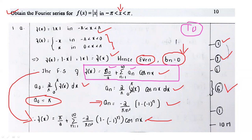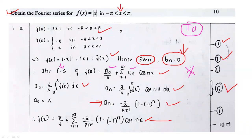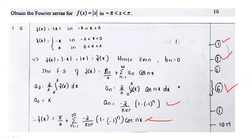I request everybody to go through these steps: definition of the function, importance of the modulus function, then the Fourier series formula. Compute a0, compute a_n, then elaborate f(x). You may get a similar kind of question for other functions in the university examination. Sometimes the same question might be asked, as this is a university question from two years back. Likewise, you can expect a similar kind of question.